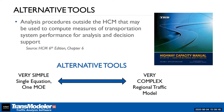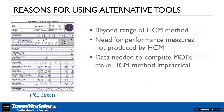Within the HCM, Chapter 6 is dedicated to alternative tools. They're defined as procedures outside of the HCM that may be used to compute transportation performance measures for analysis and decision making. Alternative tools is a very generic term — it can mean anything from something very simple, like a single equation with one measure of effectiveness, all the way to a complex micro-simulation traffic model.